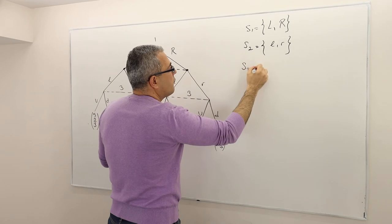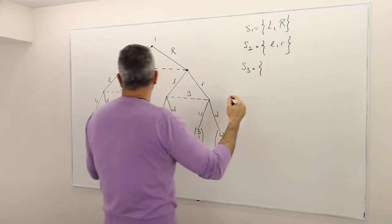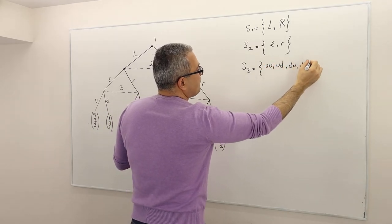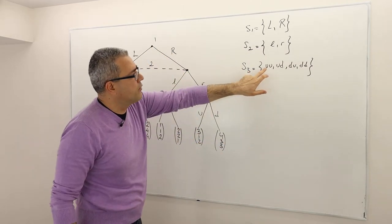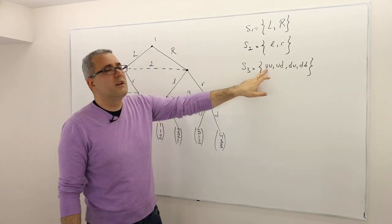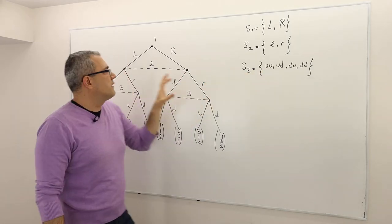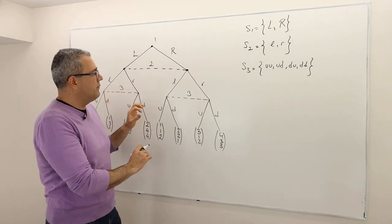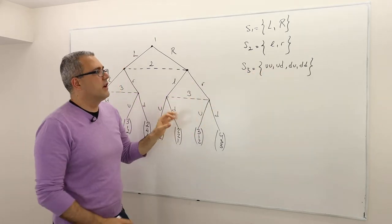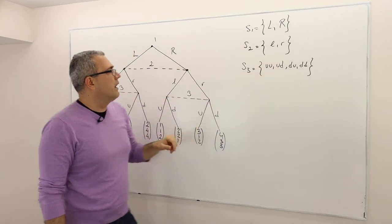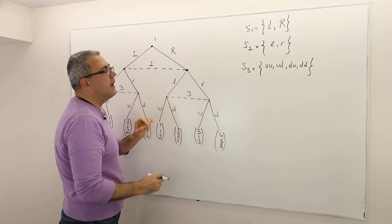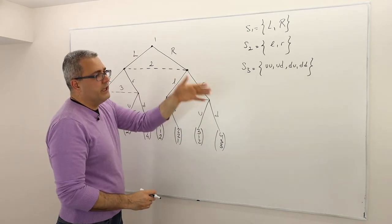Player three, however, has four strategies. I'm going to explain why she has four: UU, UD, DU, DD. These correspond to what player three does on the left side and then the right side of the game. For example, UD means she plays U on the left side and D on the right side. Symmetrically, DU means D on the left and U on the right.